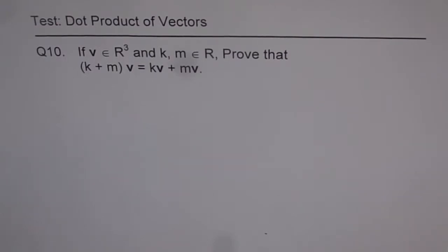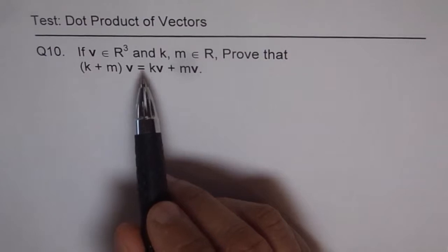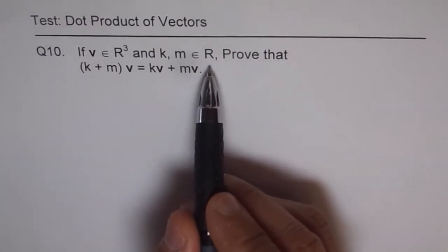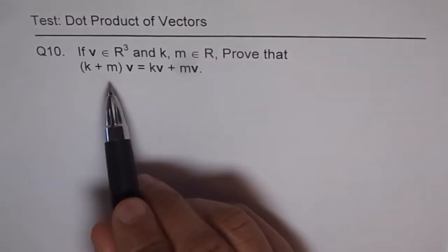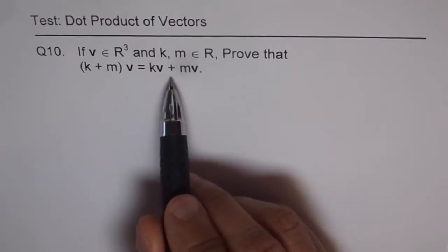If vector v belongs to R³, that means three-dimensional space, and k and m belongs to R, real numbers, prove that (k + m)v = kv + mv.